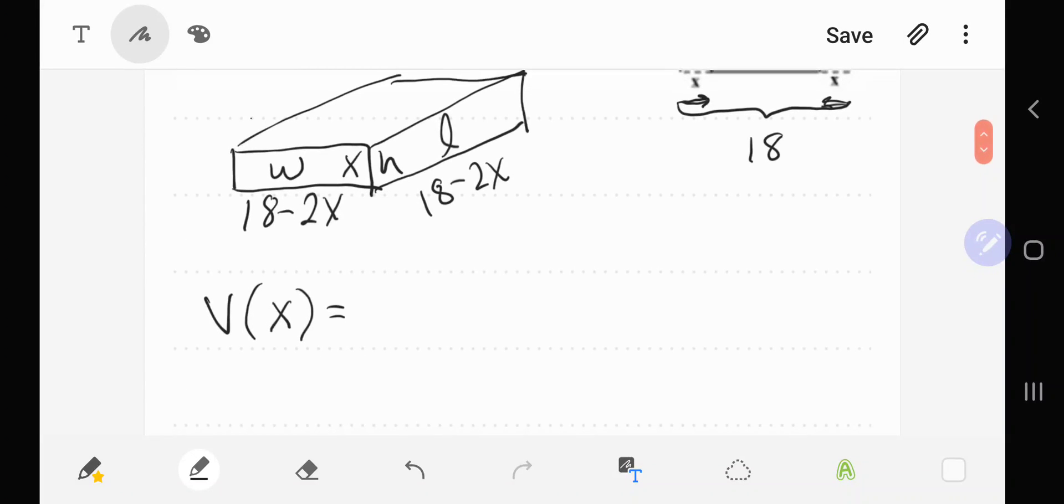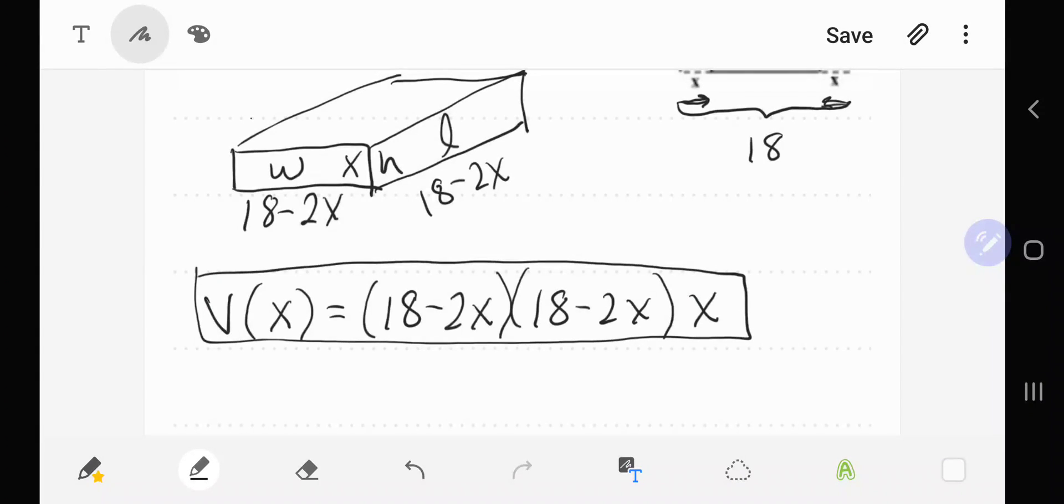Now that we have the length, width, and height in terms of x, we can write the volume formula. That's going to be length times width times height.